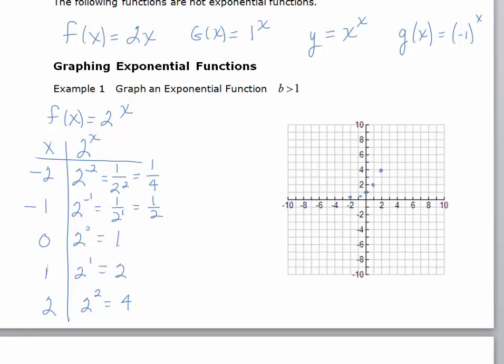You can see here, as x gets larger, the function's growing even faster. Say we added, we wanted to do x equals 3, and we had 2 to the third, that's actually 2 times 2 times 2, which is 8. So at 3, we'd be all the way up here already. This grows very quickly as x increases.